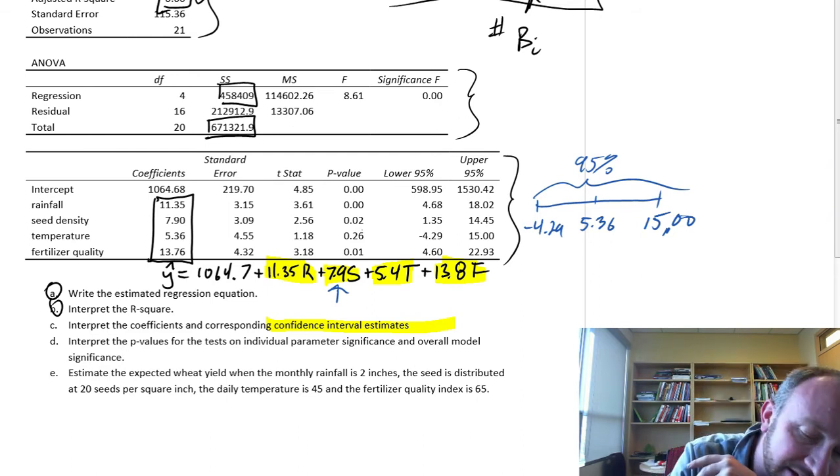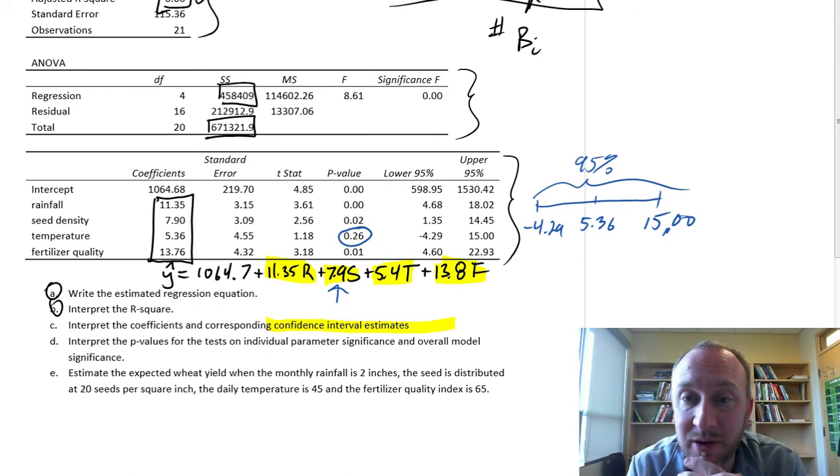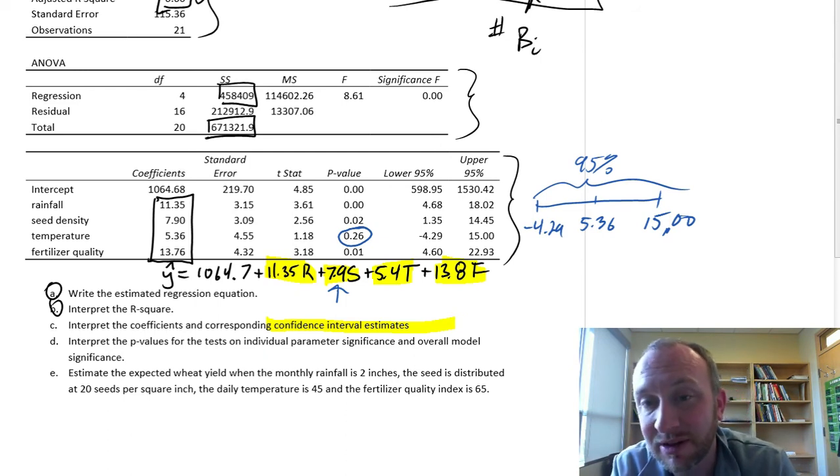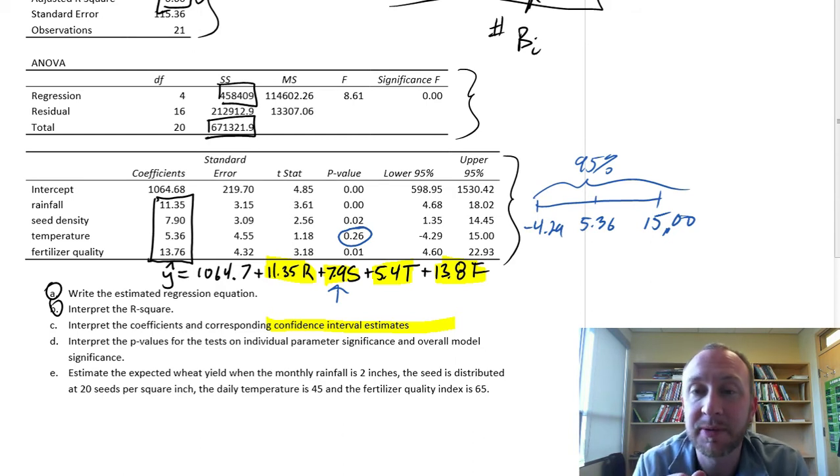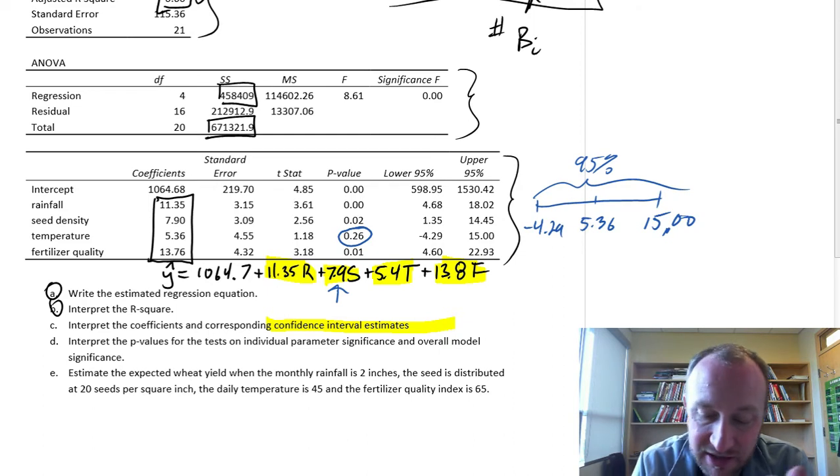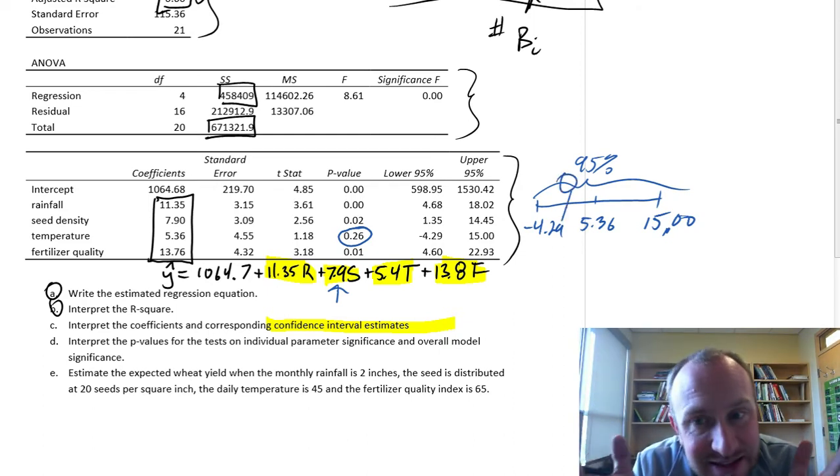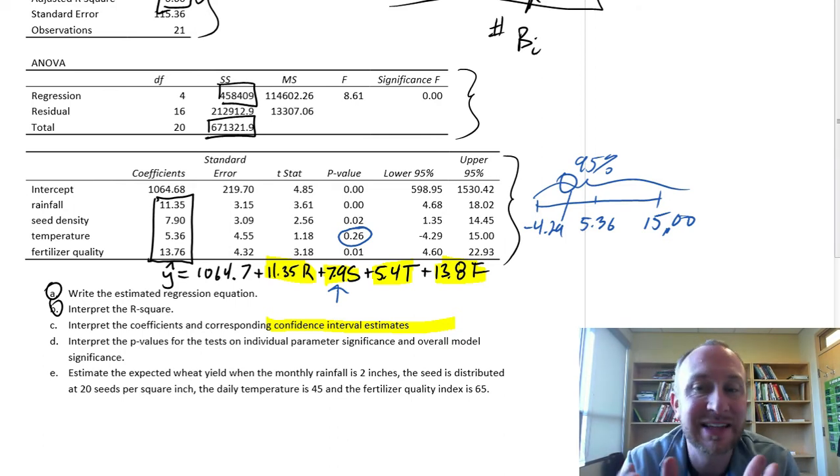Now this is going to be consistent with our test results that we're going to do in the next part of this question. My point estimate is for each additional degree Fahrenheit that we experience, on average, that increases wheat yield by 5.36 pounds. And 95% confident that it's between negative 4 and positive 15. Of course, that means there's a zero in there somewhere. Which means that at 95% level of confidence, we can't say that it has a statistically significant impact. I can't say that it's statistically different from zero.